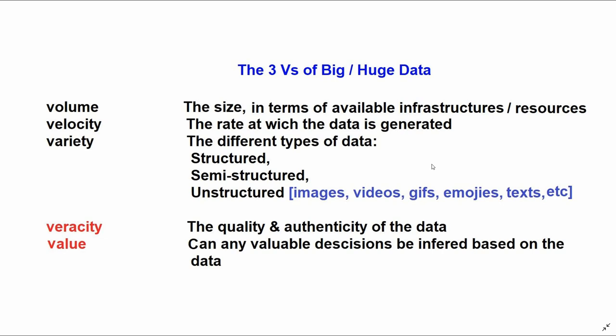One thing we will not leave without mentioning now is the three Vs of big data or the three Vs of huge data. We get volume, velocity, and variety. Some authors actually introduce some other Vs. Some say 5, some say 10. Then I just picked some of these, some of the extra Vs, like these two here, so that we will just mention them in passing. So the three Vs: volume, velocity, and variety. We will talk of volume: we mean the size of the data in terms of the available infrastructure and resources we get. Then the velocity: the rate at which that particular data is generated or consumed.